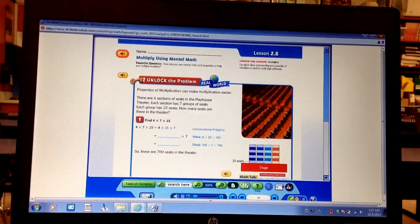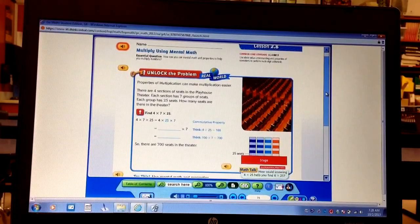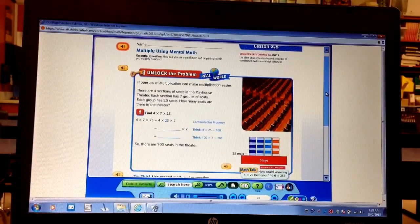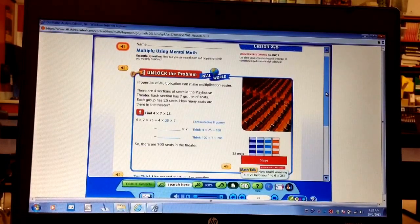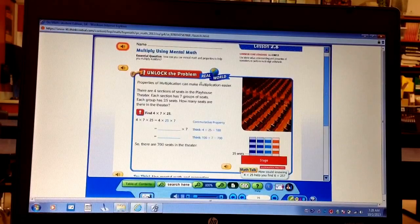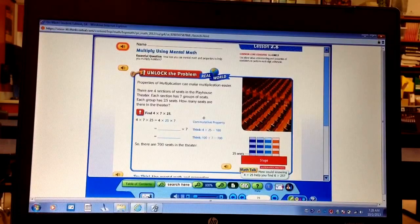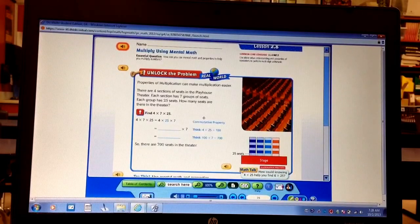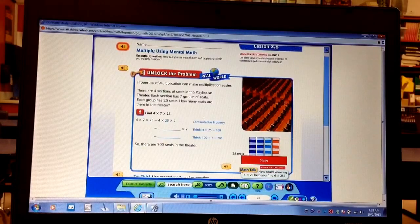Okay, if you look over here at the theater seats. Alright, there are four sections of seats in the playhouse theater. Each section has seven groups of seats. Each group has 25 seats. How many seats are there in the theater? Well, 4 times 7 times 25 is the commutative property. That means no matter which way you multiply these numbers, you're going to get the same answer. So what we need to do is look for two numbers that are easy to multiply, figure out the answer.